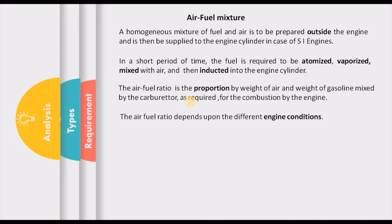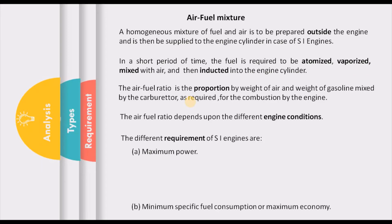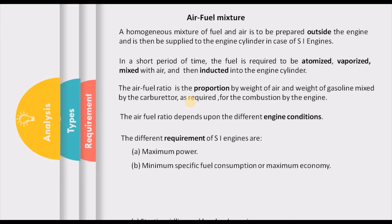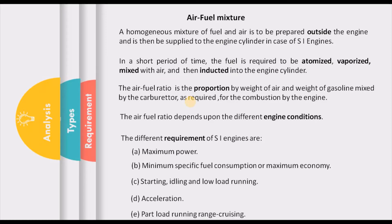The quality of this particular air fuel ratio depends on different engine conditions. The different engine conditions which require different types of air fuel ratio are: maximum power, minimum specific fuel consumption or maximum economy, starting, idling, low load running, acceleration, and part load running or cruising. These many conditions require different quality of mixture in SI engines, and that has to be supplied by what we call a carburetor. The carburetor prepares the mixture as per the requirement and then supplies it to the engine.